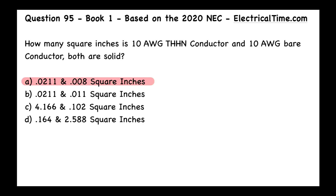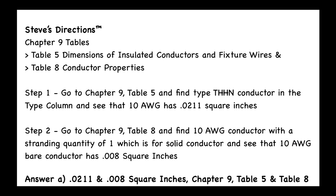So we're asking what article are we talking about here — they're asking us about the square inches of the THHN conductor and the bare conductor, and we're told both are solid. We're going to go to Chapter 9, where we'll find some very special tables. Let's go there together.